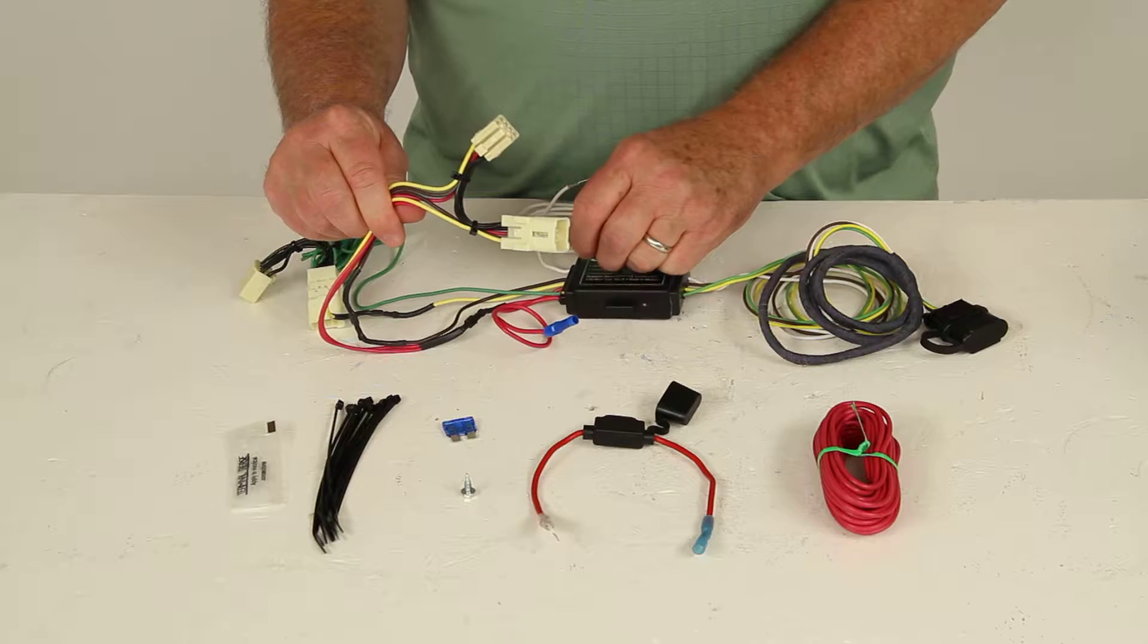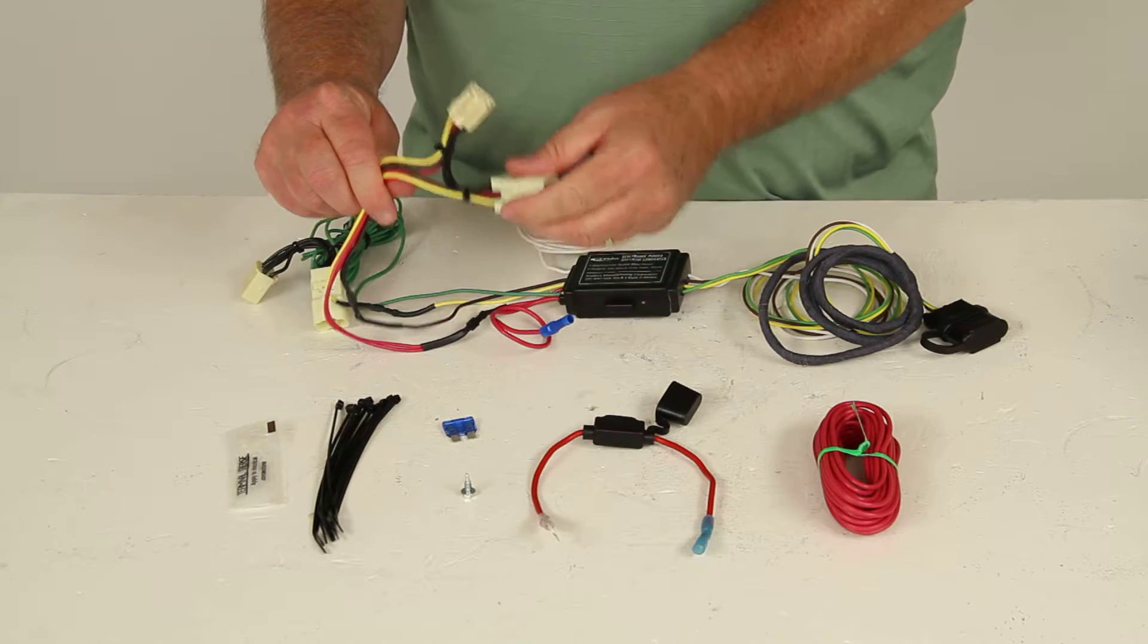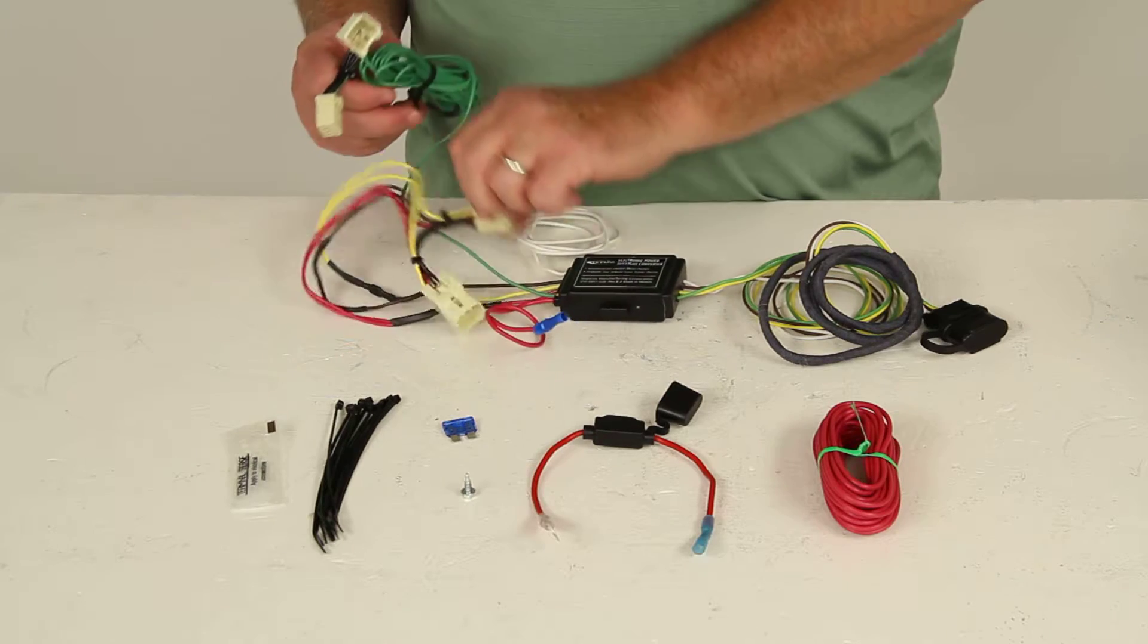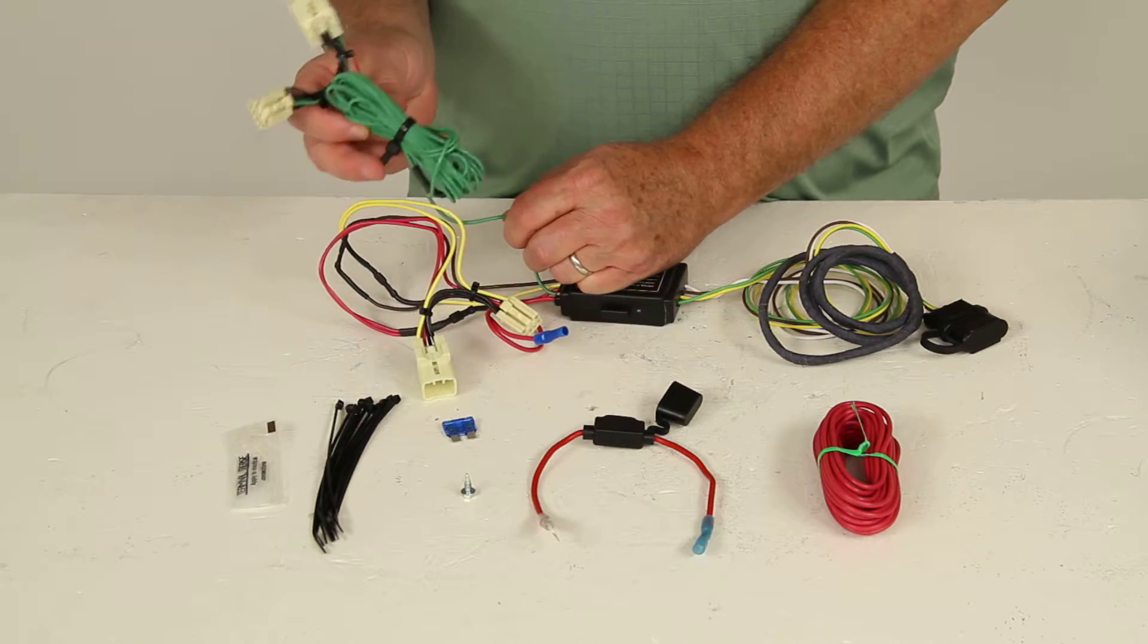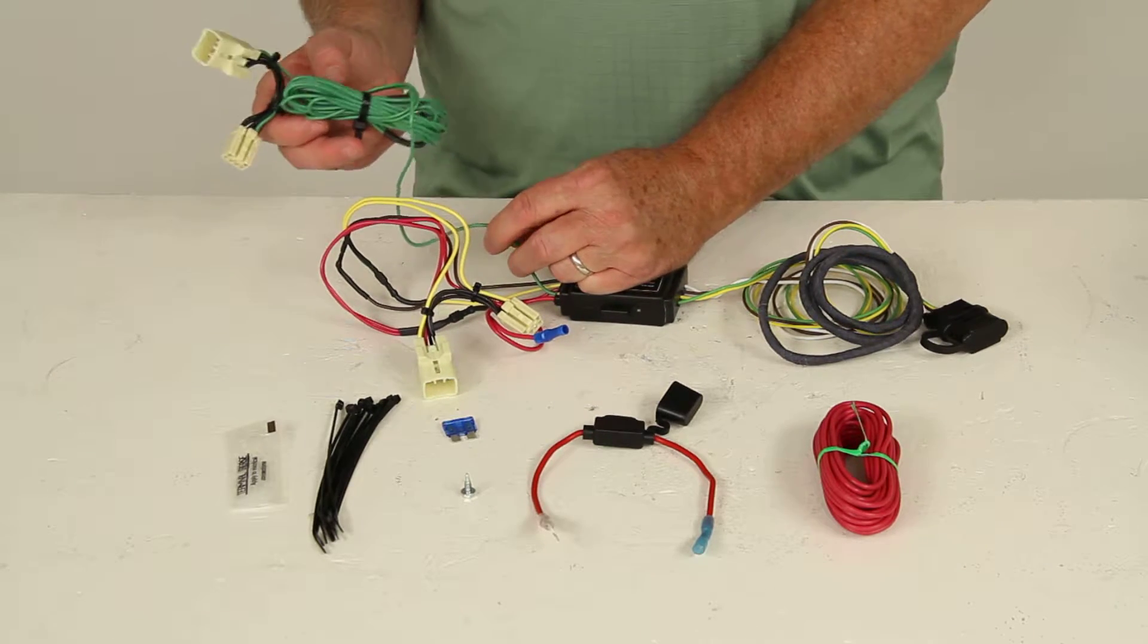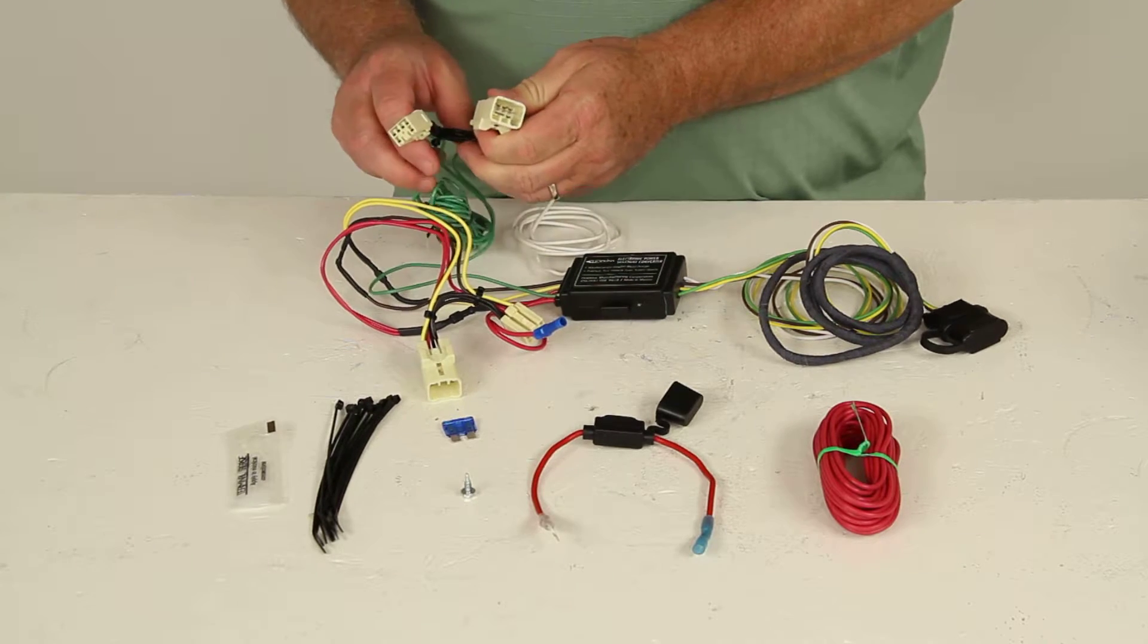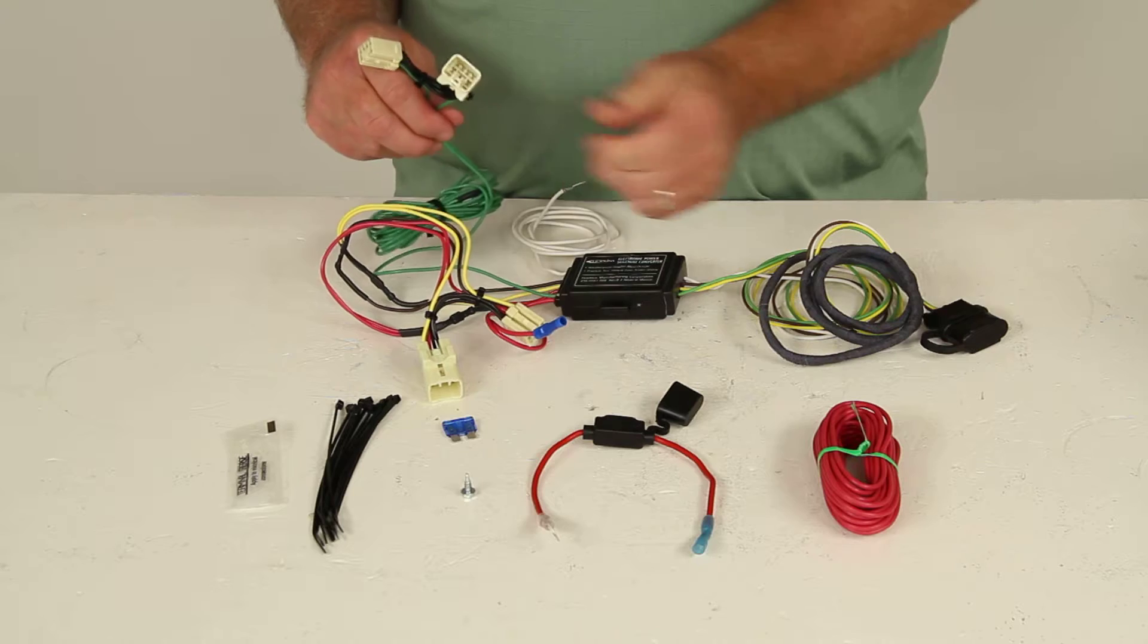So you'll go to your driver's side tail light and behind the tail lights, disconnect them, connect this into it, and then you'll go to the passenger side and this extra length of green wire will run across the car onto the passenger side. And again these connectors will plug into the connectors behind your tail lights on the passenger side.